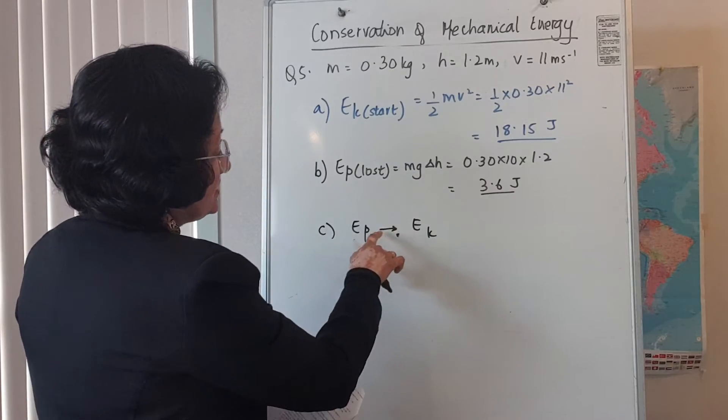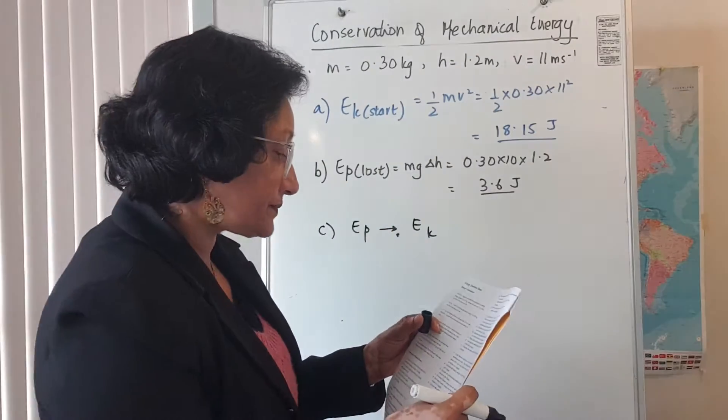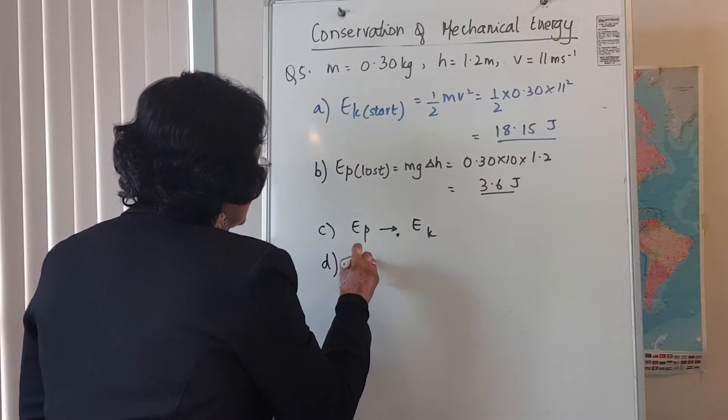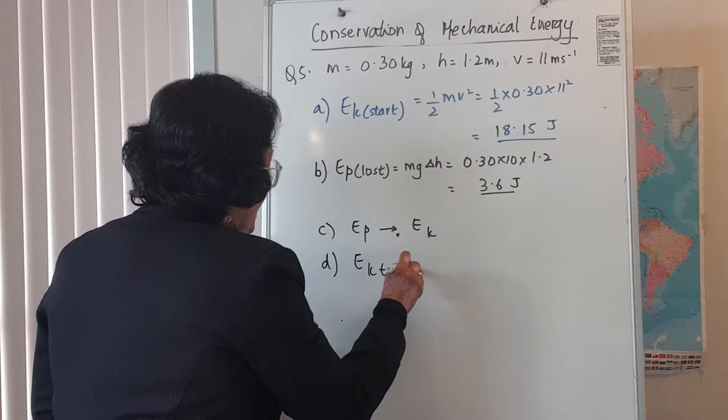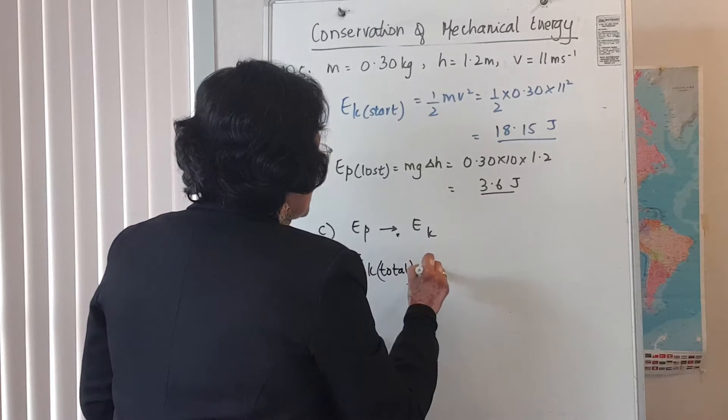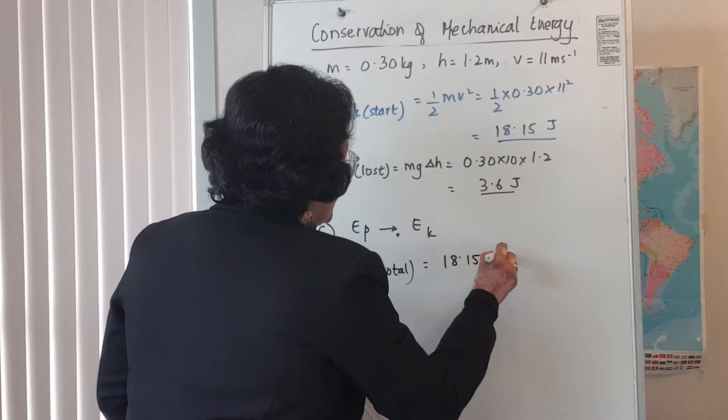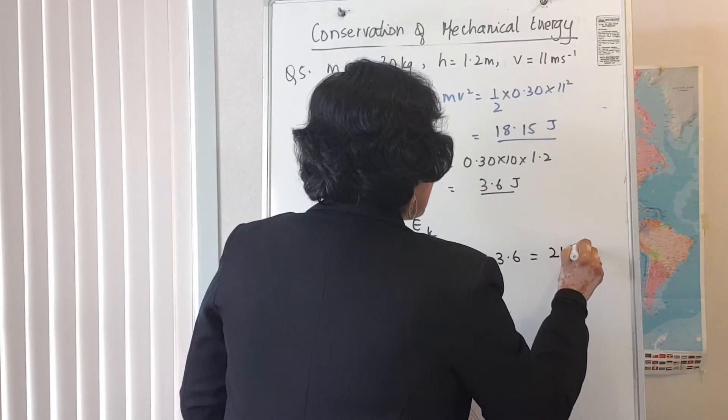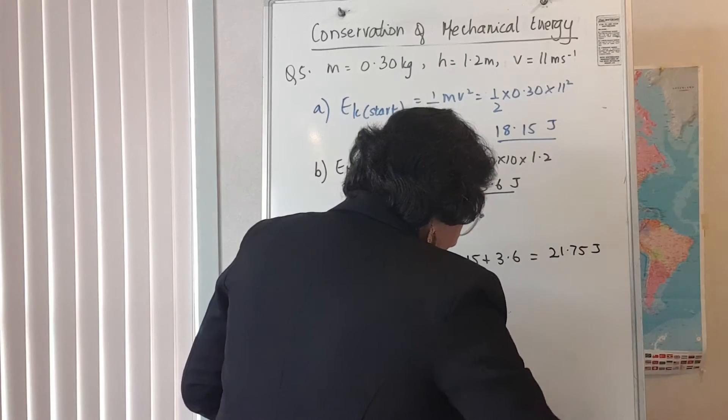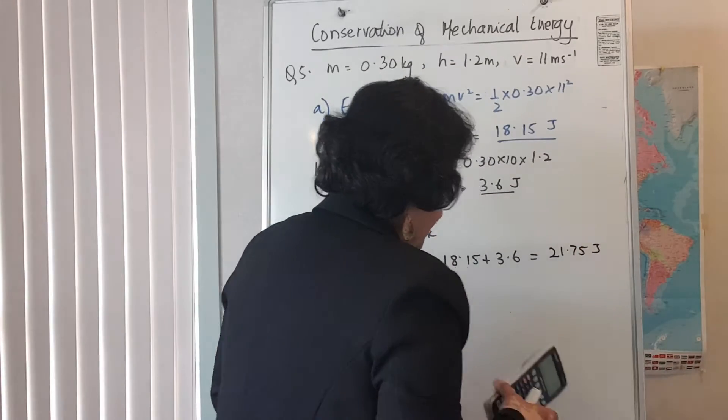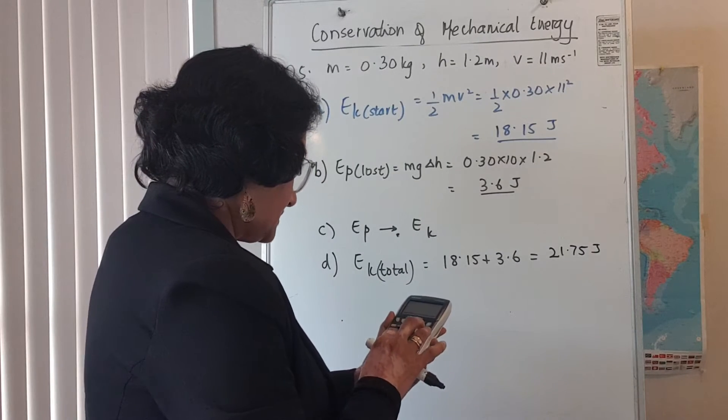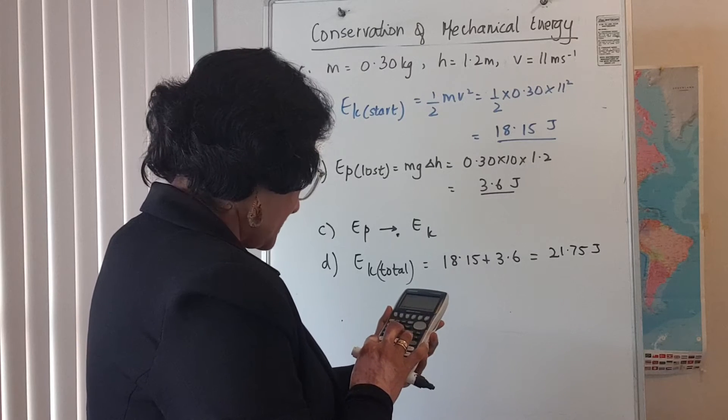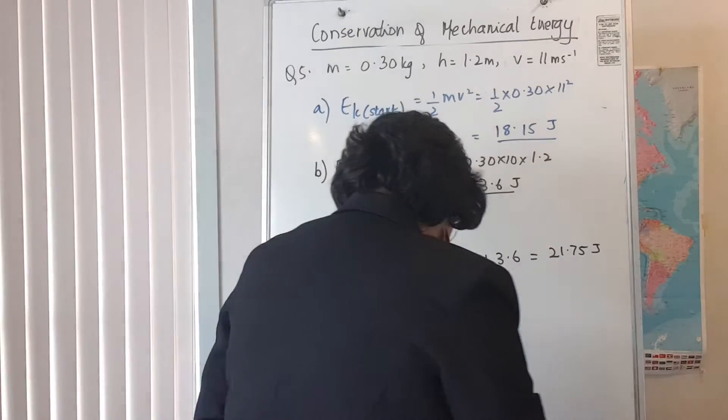Calculate the total kinetic energy of the ball at the instant it hits the ground. So your total kinetic energy is this plus that, so it's 18.15 plus 3.6, so you get 21.75. Let me make sure I've got my addition correct, so it's 3.6 plus 18.15, yeah 21.75.